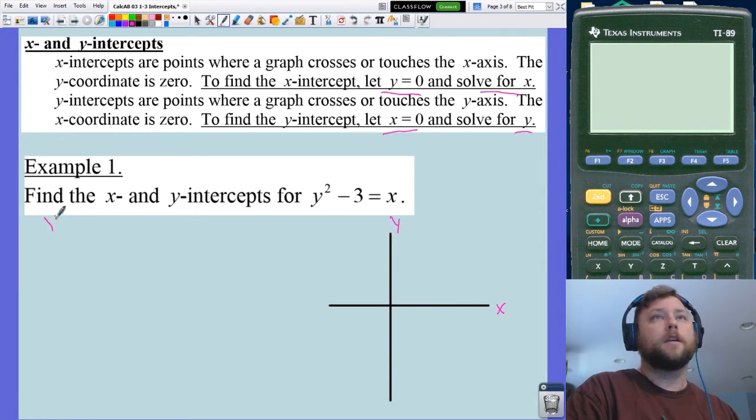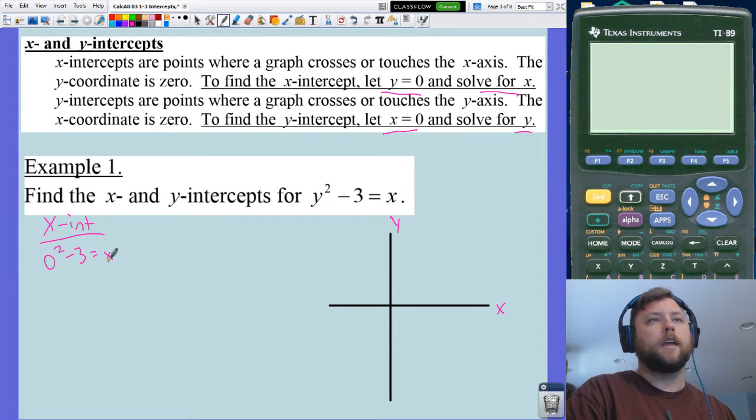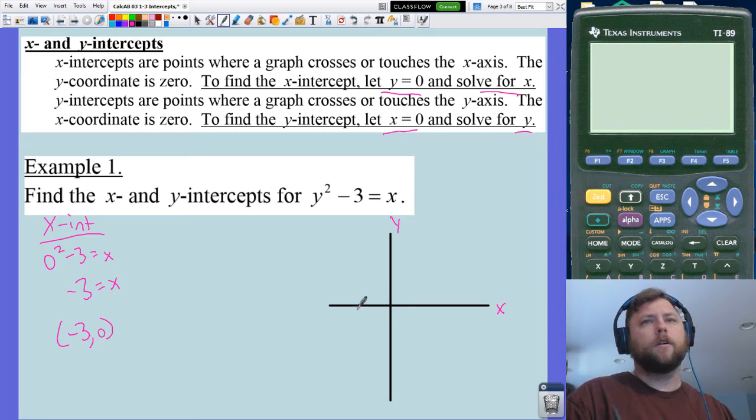First I'm going to solve for x-intercepts. I'm going to set y equal to 0, so you get 0 squared minus 3 equals x. That becomes x equals negative 3. My point of intersection happens at (-3, 0). If I were to graph that, that might be out here.